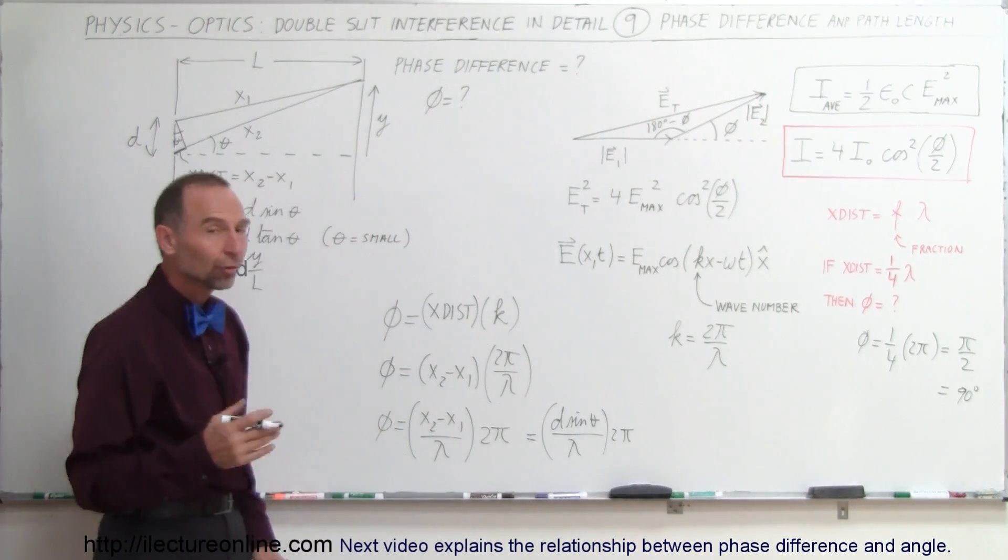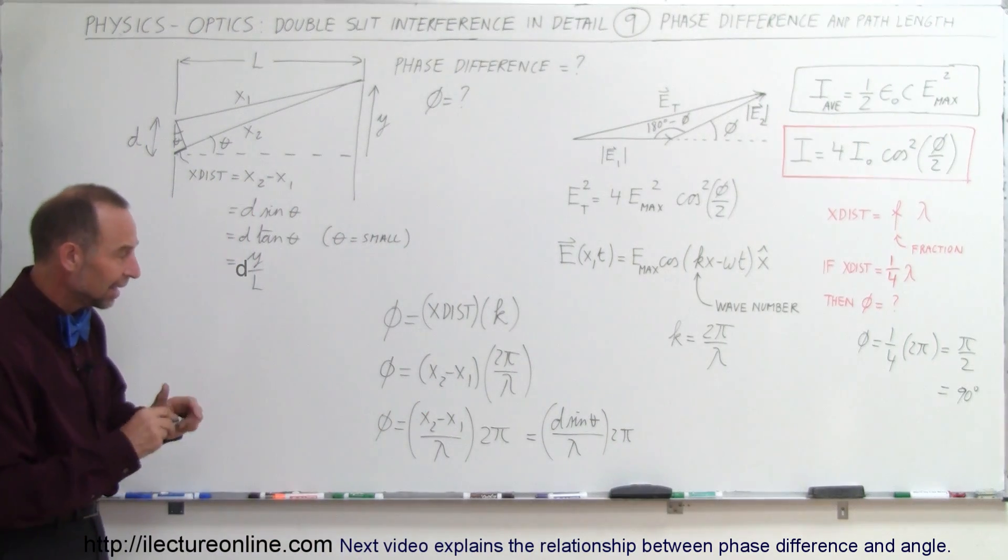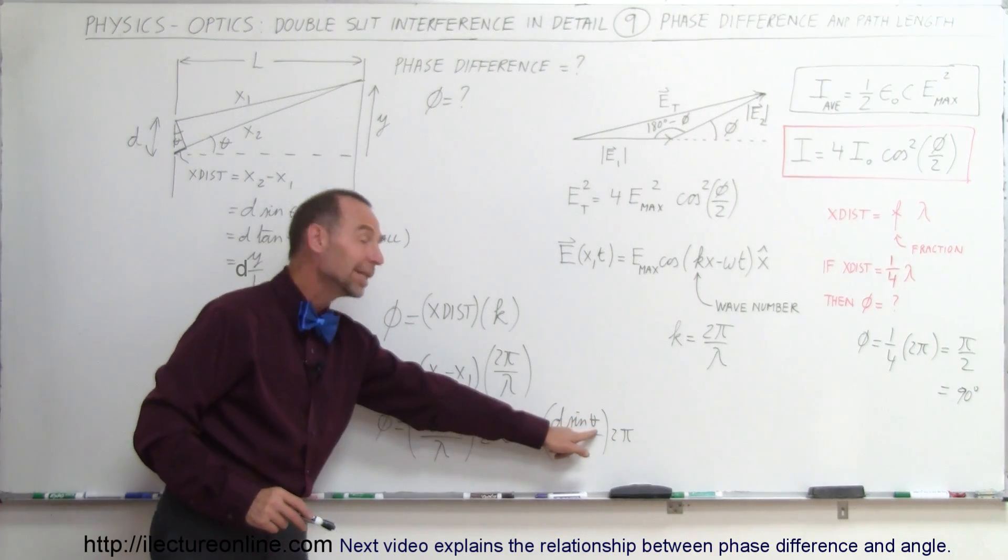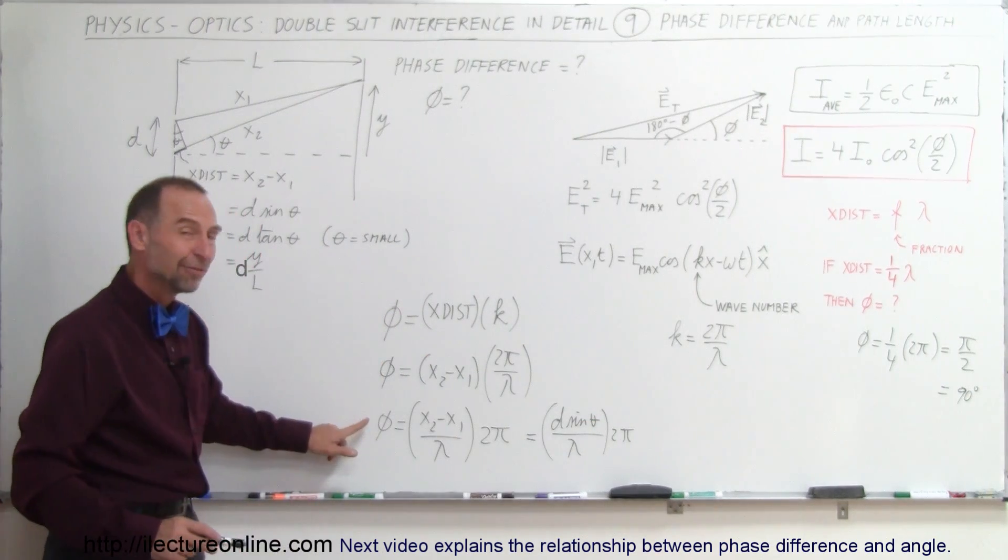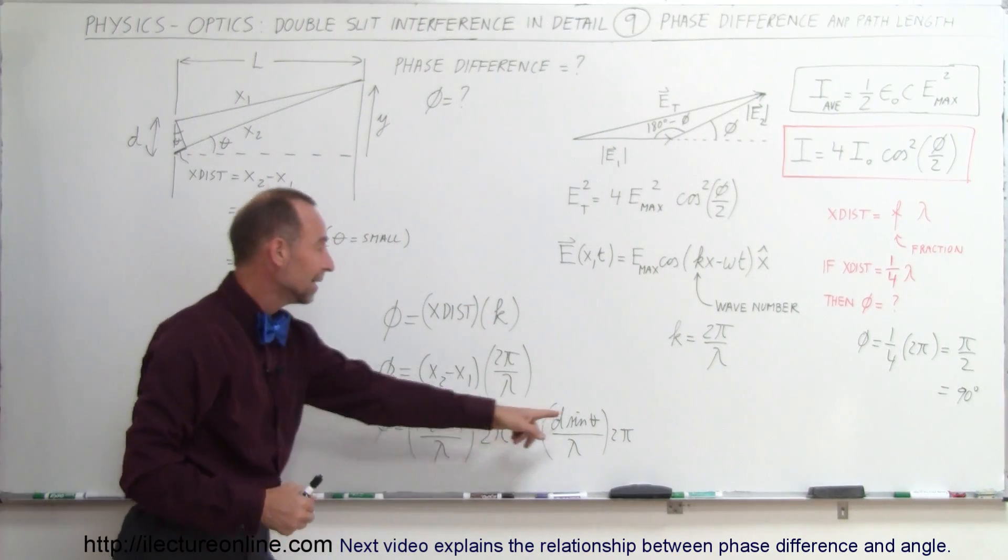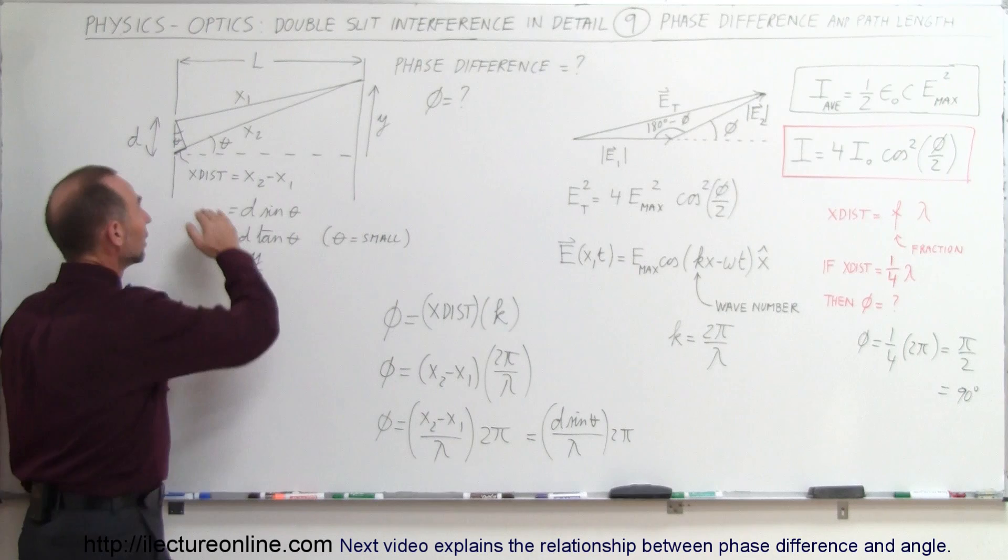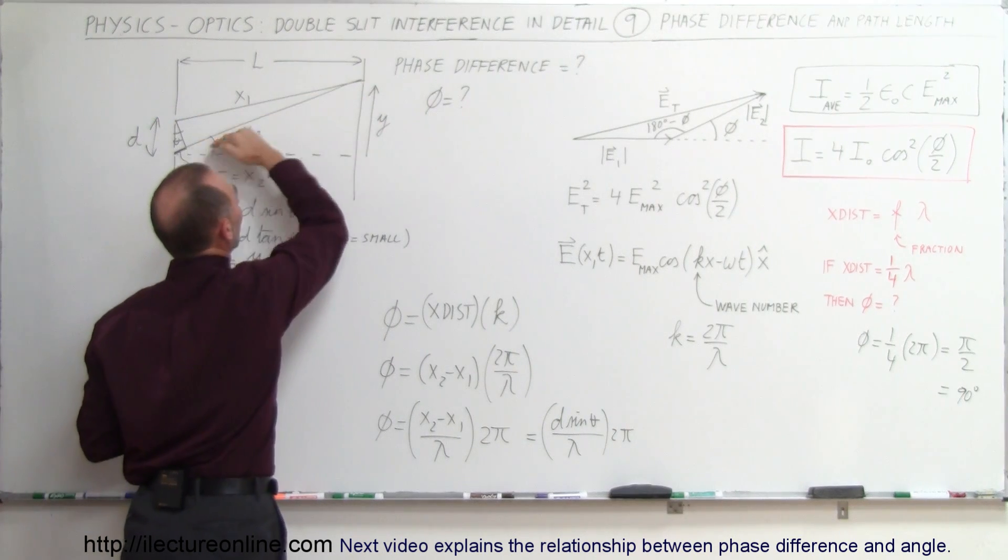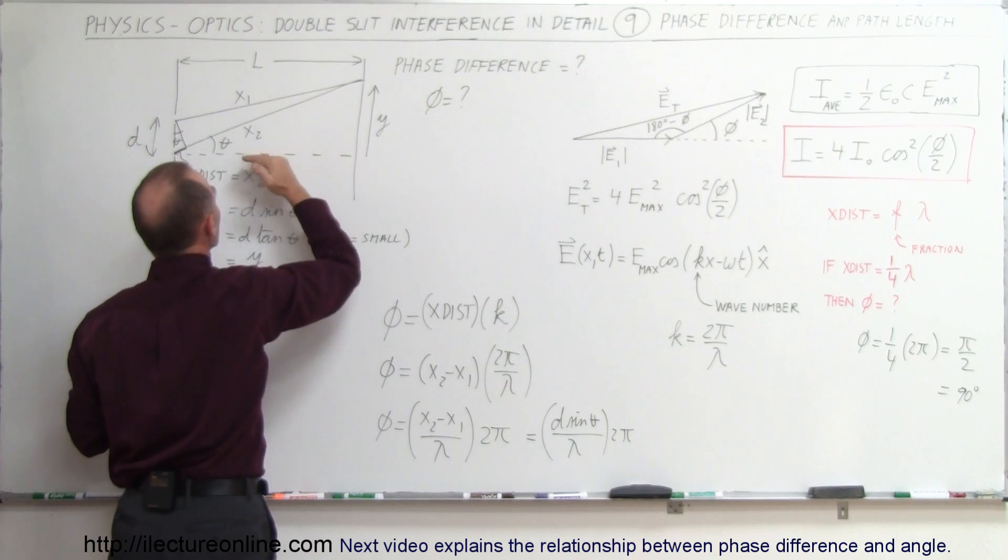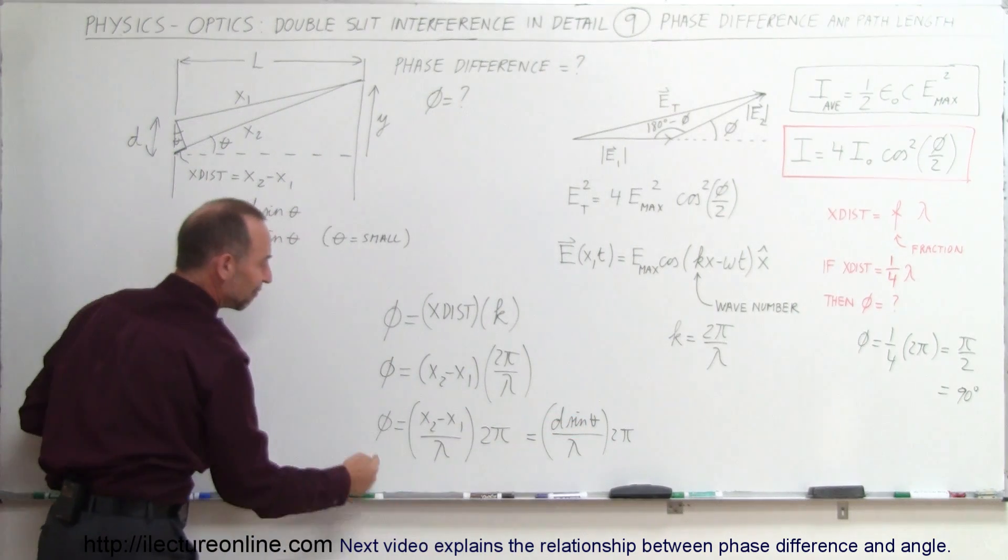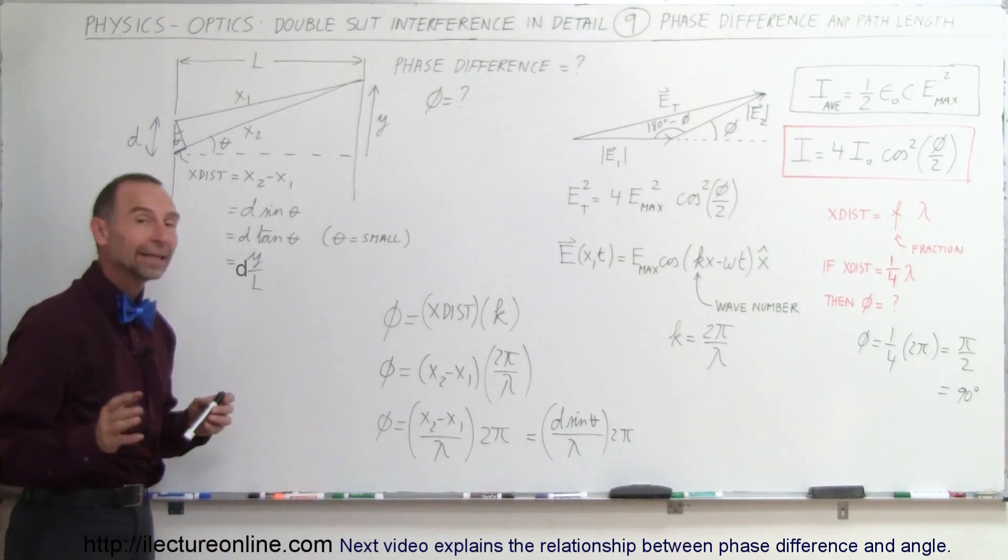By doing this, we're beginning to see a relationship between the angle theta and the angle phi. Phi is the phase difference of the two waves when they come together on the screen. Theta is the angle from the slits to the point on the screen of interest. If this angle is known, we should now be able to calculate back the phase difference using the angle as a known quantity.